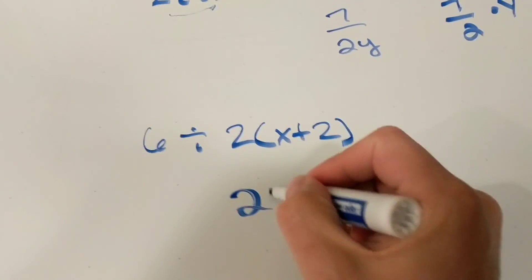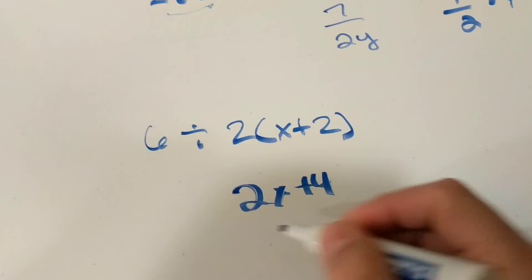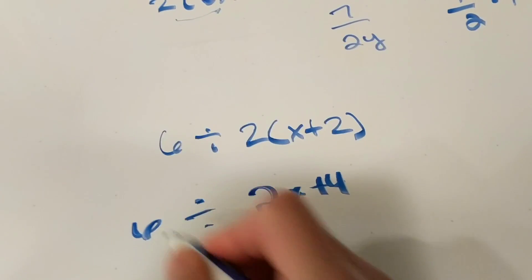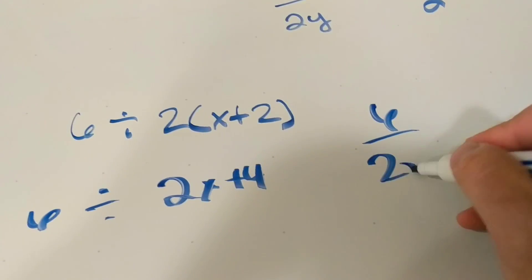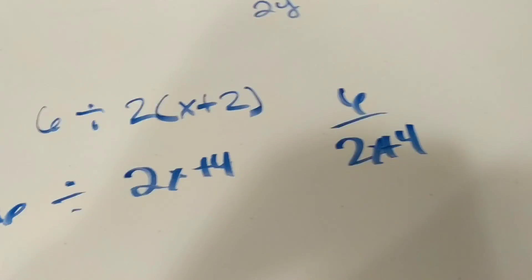And many people would go, oh yeah, well obviously that's 2x plus 4. That's just been factored out. And so if I was to write that, it would be 6 over 2x plus 4.